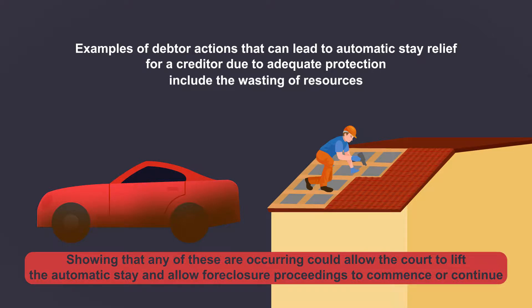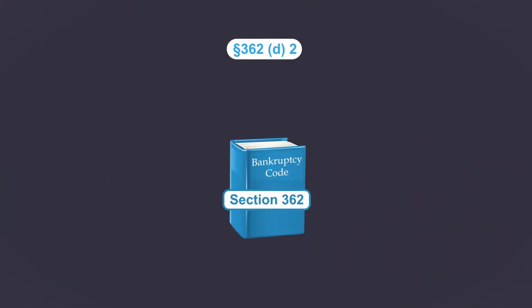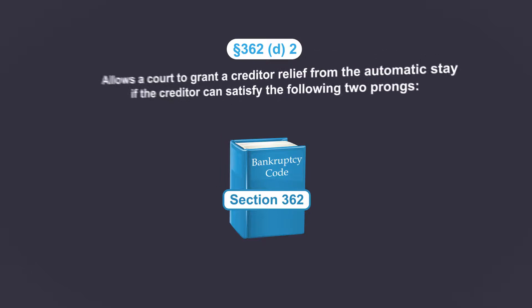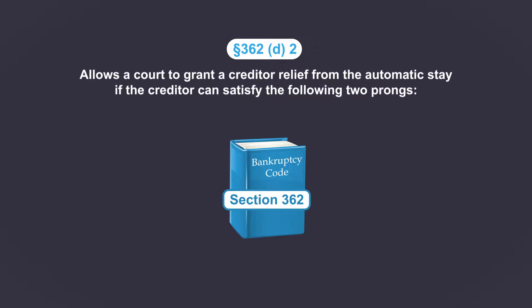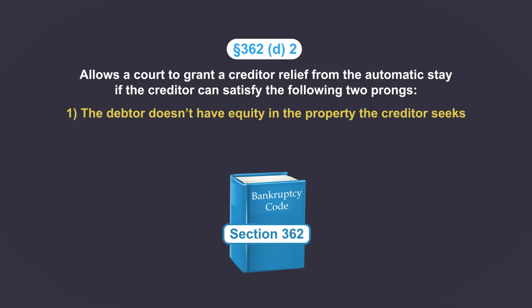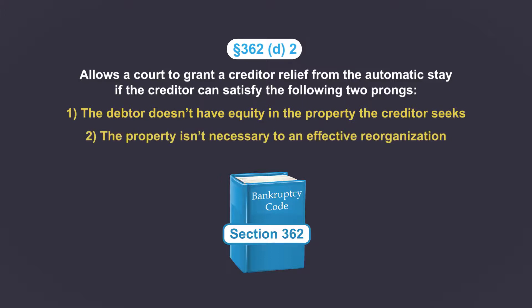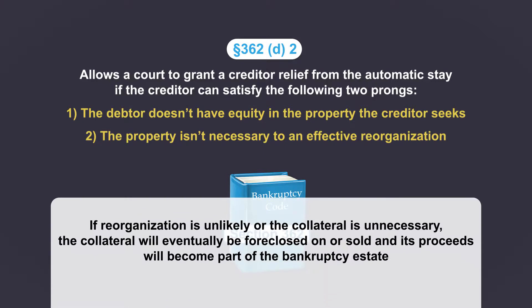Section 362(d)(2) of the Bankruptcy Code also allows a court to grant a creditor relief from the automatic stay if the creditor can satisfy the following two prongs: one, the debtor doesn't have an equity interest in the property that the creditor seeks, and two, the property isn't necessary to an effective reorganization. If reorganization is unlikely or the collateral is unnecessary, the collateral will eventually be foreclosed on or sold, and its proceeds will become part of the bankruptcy estate.